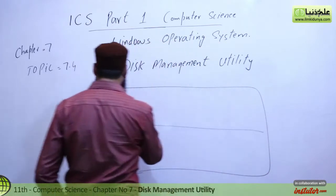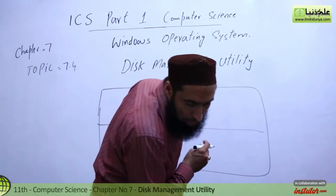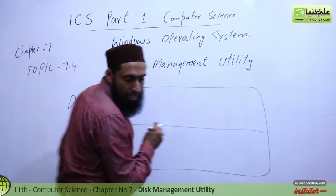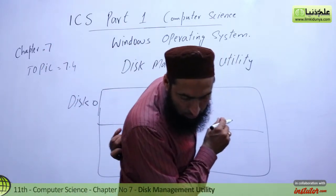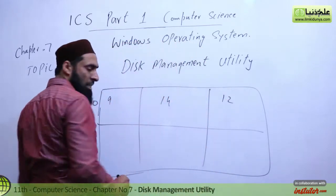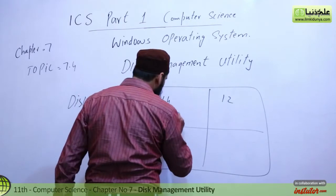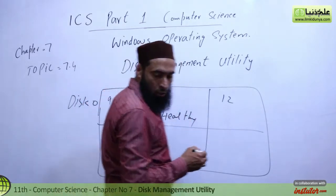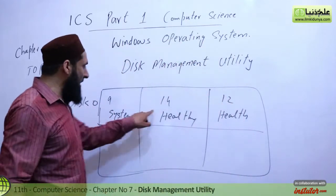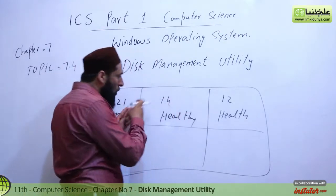From each individual drive you can see how much the size is — 9, 14, and 12. These are the first partitions. In the system there is a root partitioning, and then the system partitioning. We have two partitions.